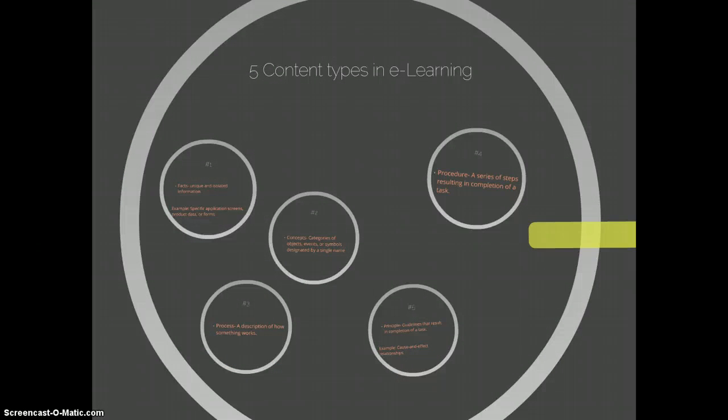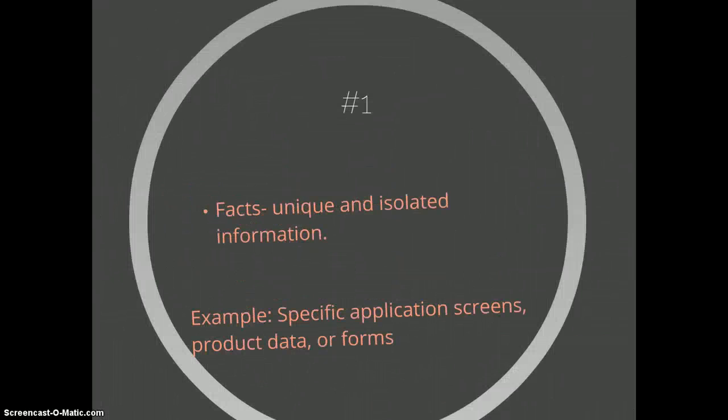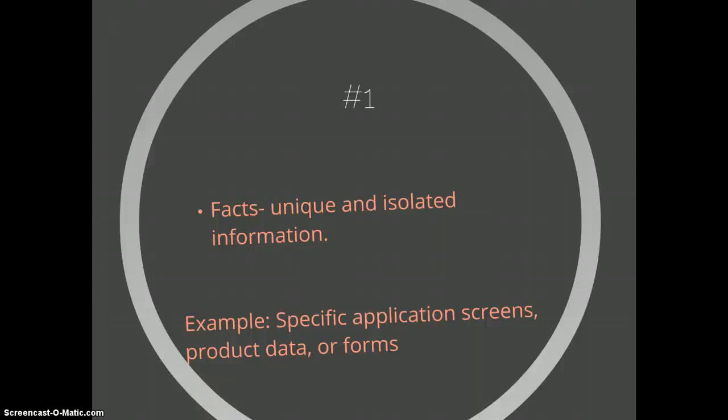There are five most commonly used content types in e-learning which are used to teach specific learning content to the use of graphics. The first one is facts, the unique and isolated information. Examples of this is specific application screens, product data or forms.